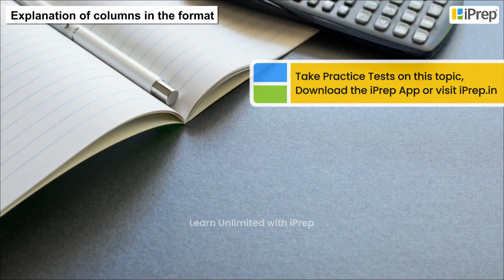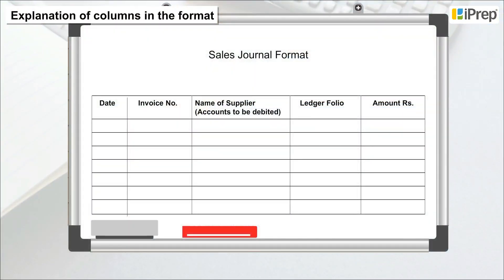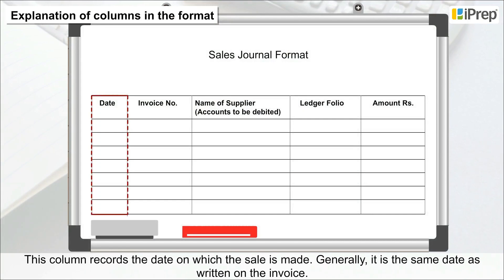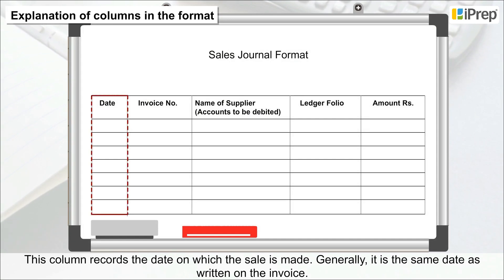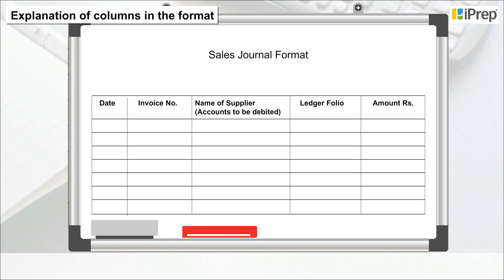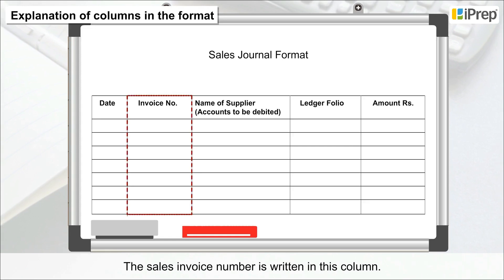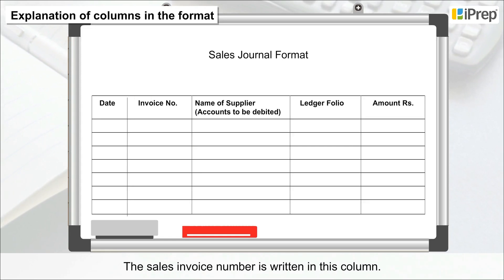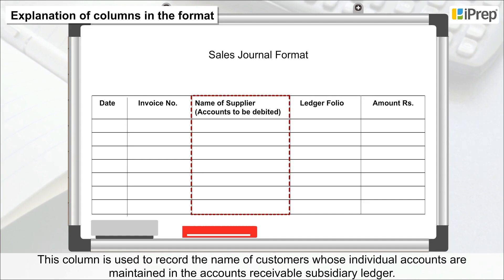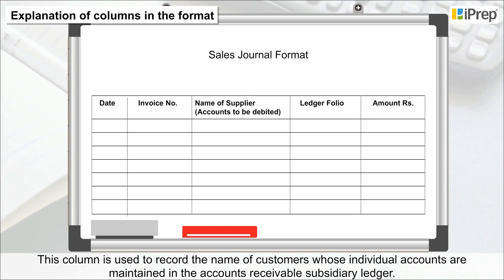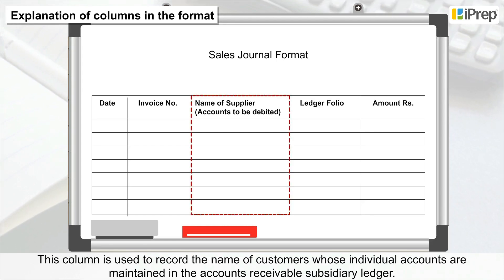Explanation of Columns in the Format. 1. Date — this column records the date on which the sale is made; generally it is the same date as written on the invoice. 2. Invoice Number — the sales invoice number is written in this column. 3. Account Debited — this column is used to record the name of customers whose individual accounts are maintained in the accounts receivable subsidiary ledger.